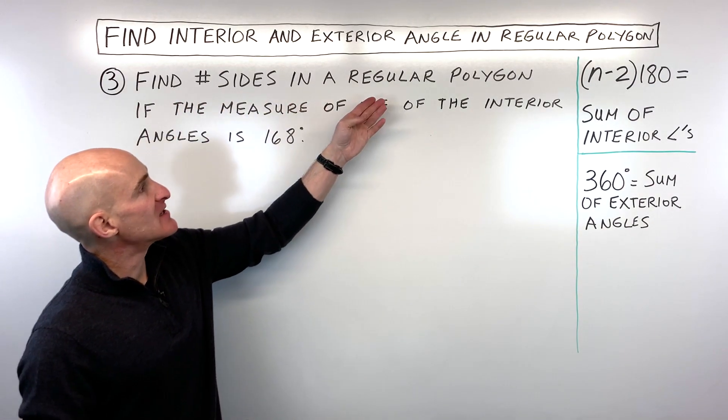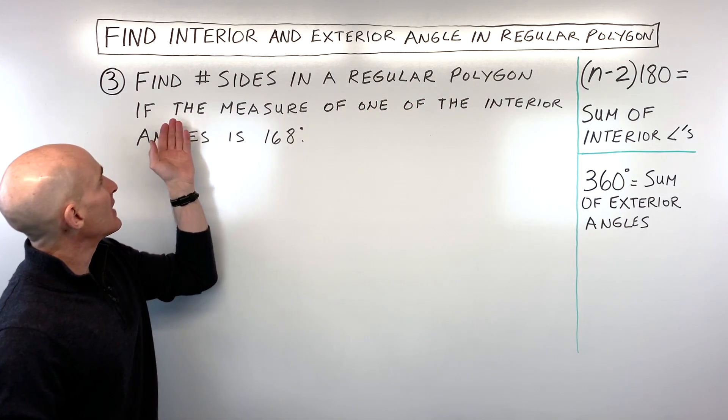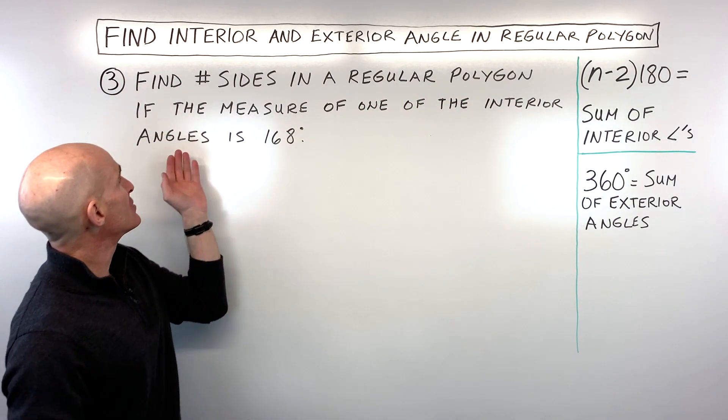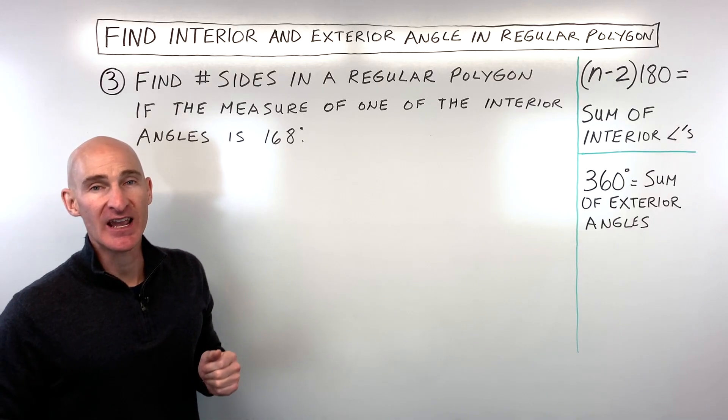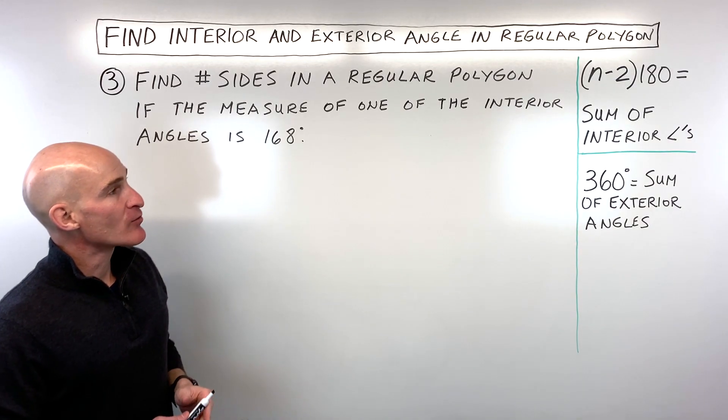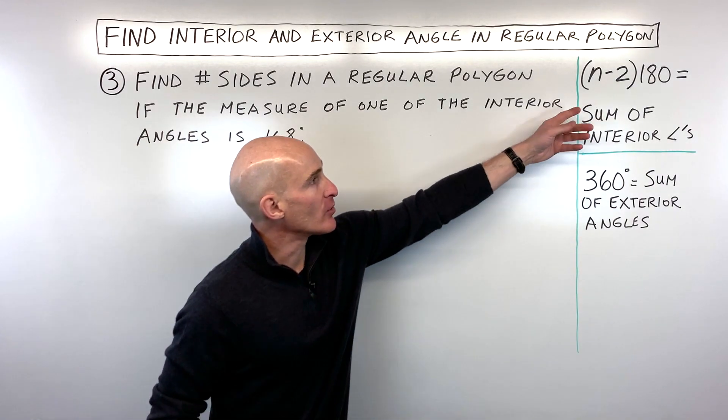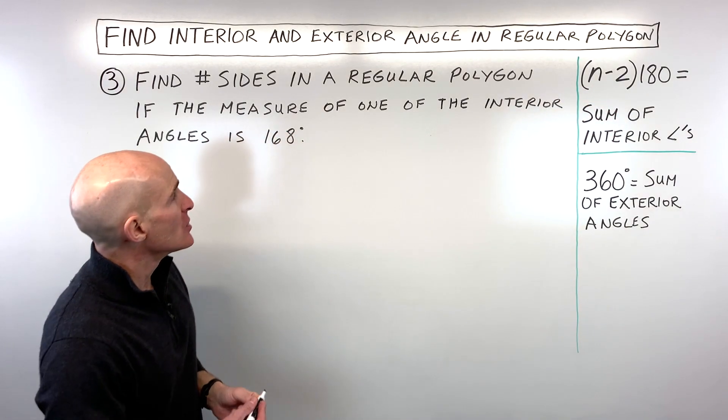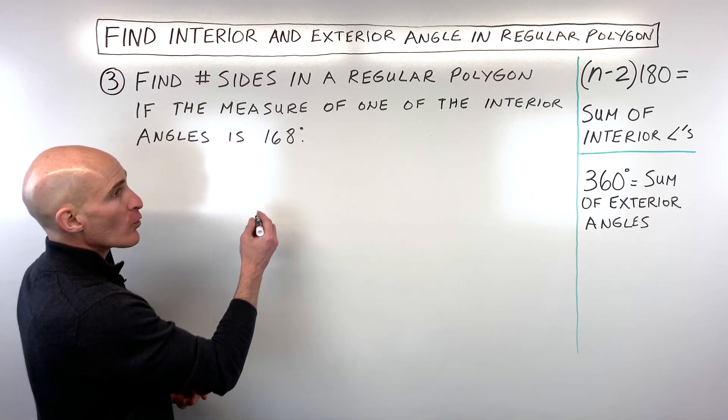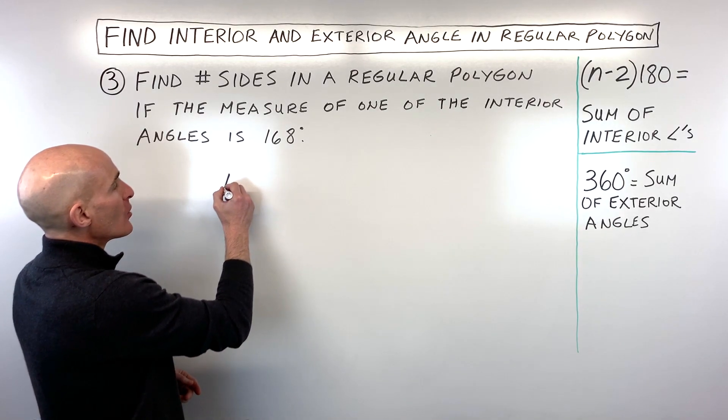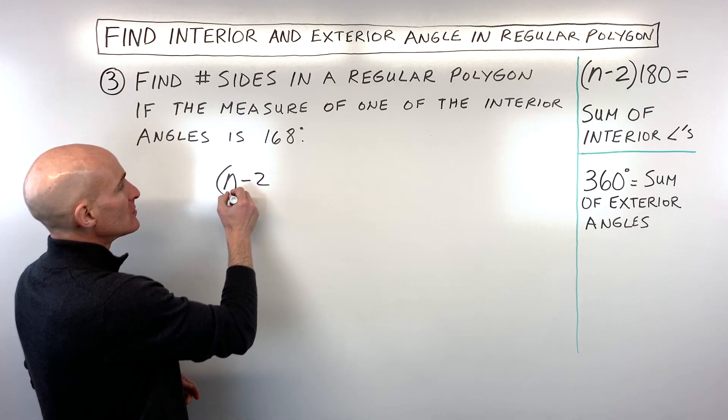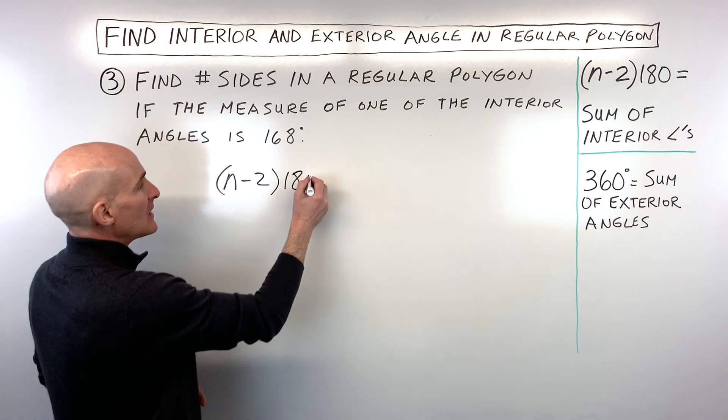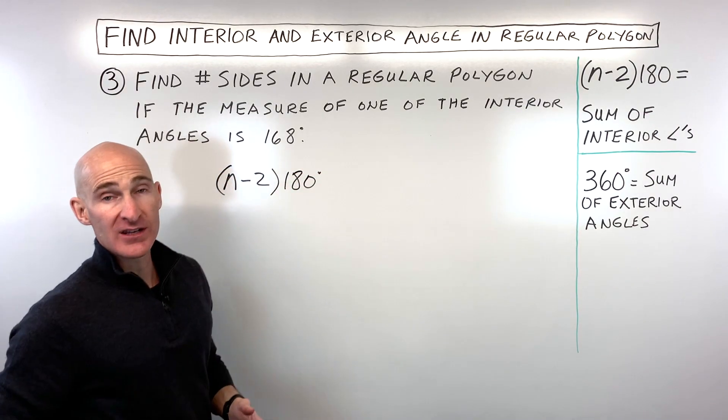So for example number three, it says find the number of sides in a regular polygon if the measure of one of the interior angles is 168. So this is an interesting problem because we're actually working backwards to find the number of sides or the number of angles in this regular polygon. So let's go ahead and set this up two different ways.